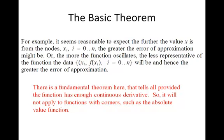We might say also the more a function oscillates, the less representative of the function the data will be. That is, you might evaluate the data all where the function is sort of about the same, but yet the function is oscillating in between the points. Consequently, the error of approximation will also increase.